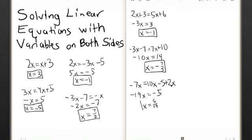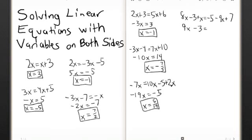Now we've got a lot here: 8x minus 3 plus x equals negative 5 minus 9x plus 7. What I recommend is to simplify on each side first. So, 8x plus x is 9x minus 3. On the right side, negative 5 plus 7 is 2, so this becomes negative 9x plus 2. Now move the negative 9x over here, giving 18x equals 5, so x equals 5 over 18.